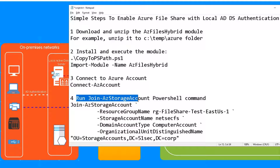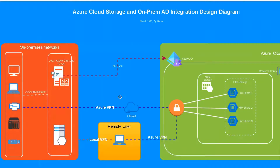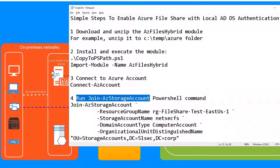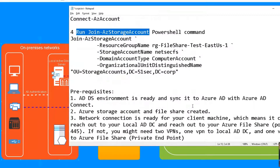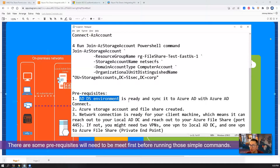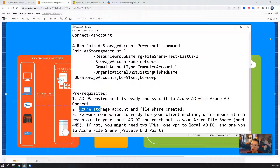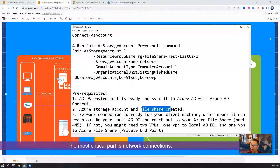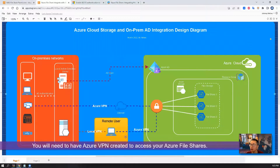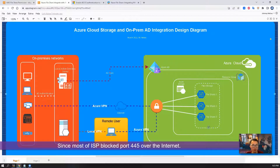After that, we just need to run the Join-AzStorageAccount PowerShell command to enable ADDS authentication for your Azure Files. But there are some prerequisites to consider. You need to get your ADDS environment ready and install Azure AD Connect to sync your local ADDS accounts to Azure AD. Of course, you also need to create your storage account and file shares. The most critical part is the network connections — you need to have an Azure VPN created to access your file shares.